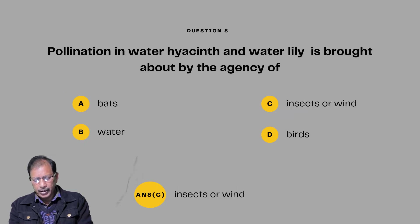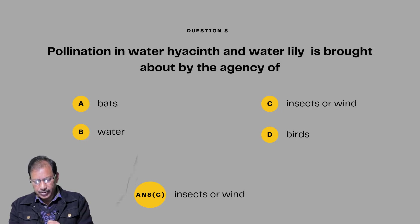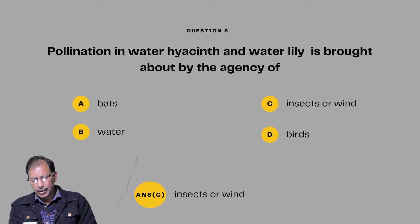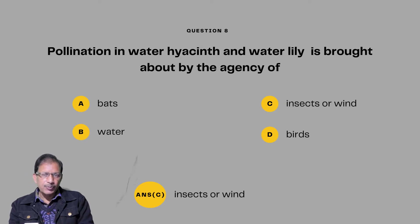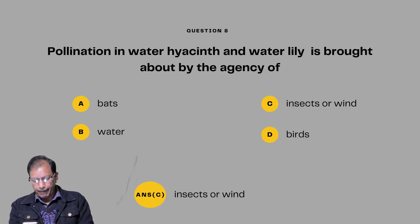Question number eight: Pollination in water hyacinth and water lily is brought about by the agency of — bats, water, insects or wind, and birds. Water hyacinth and water lily are aquatic plants, and pollination is brought about by insects or wind. Answer will be insects or wind.